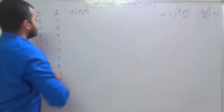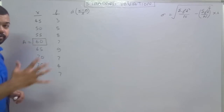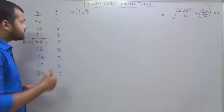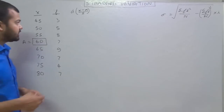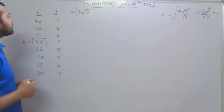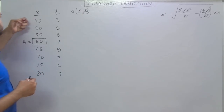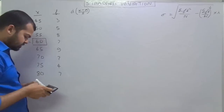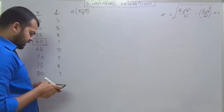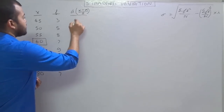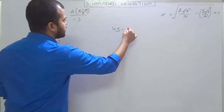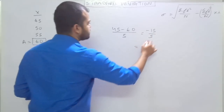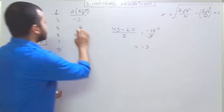Here 5 is used because the difference between these numbers is only 5. If the values differ by 10, then we take 10 — it depends on the difference of these values. So calculating d = (x − a)/i: for 45 minus 60 divided by 5, that is minus 15 divided by 5, the value comes out as minus 3. So we put minus 3 there.